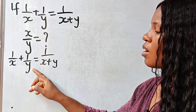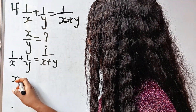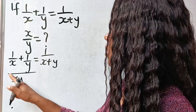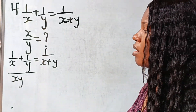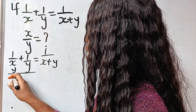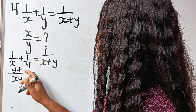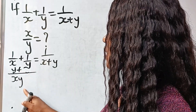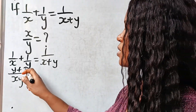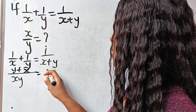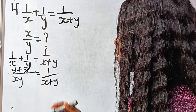The LCM of x and y is xy. Now when x divides xy, we have y. y times 1 is y, plus when y divides xy, we have x. x times 1 is x. So we have y plus x all over xy equal to 1 over x plus y.